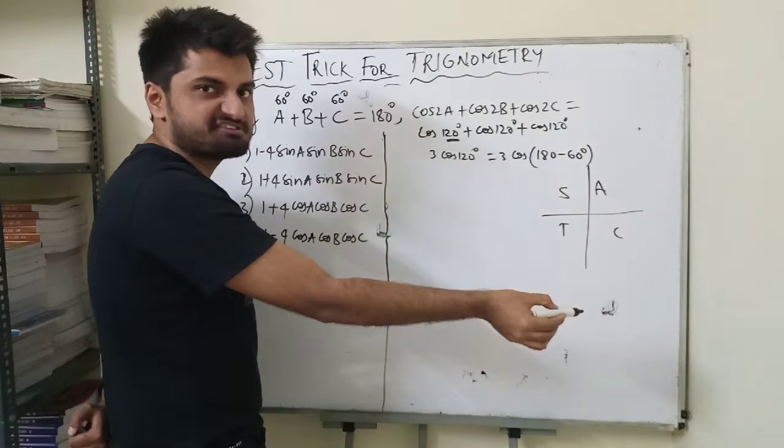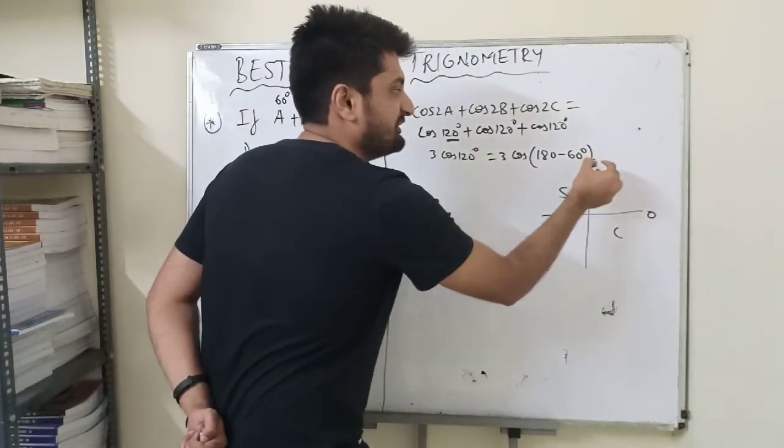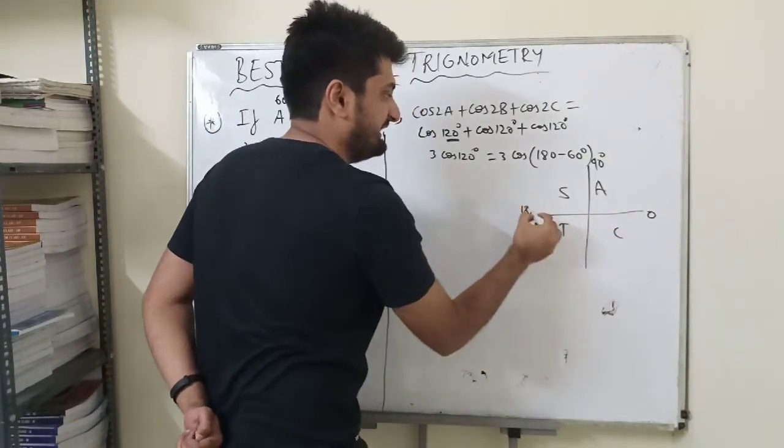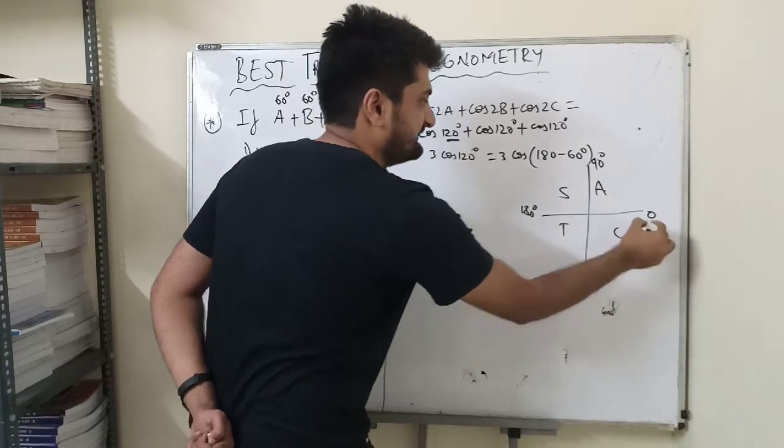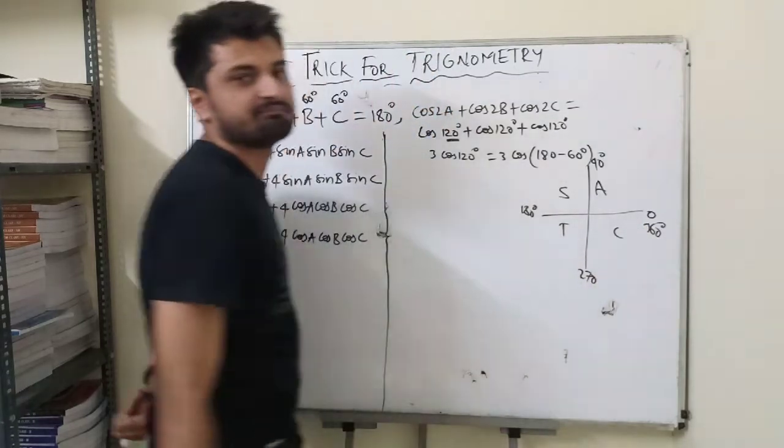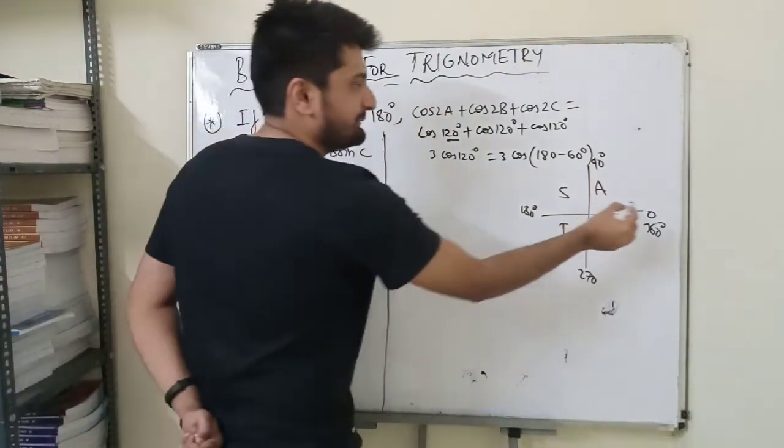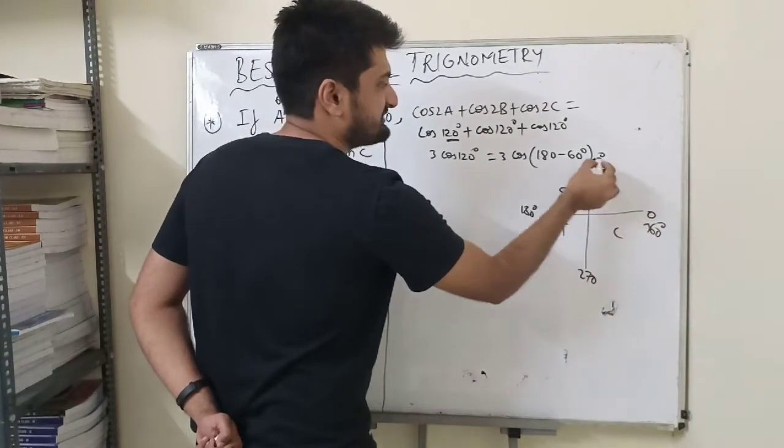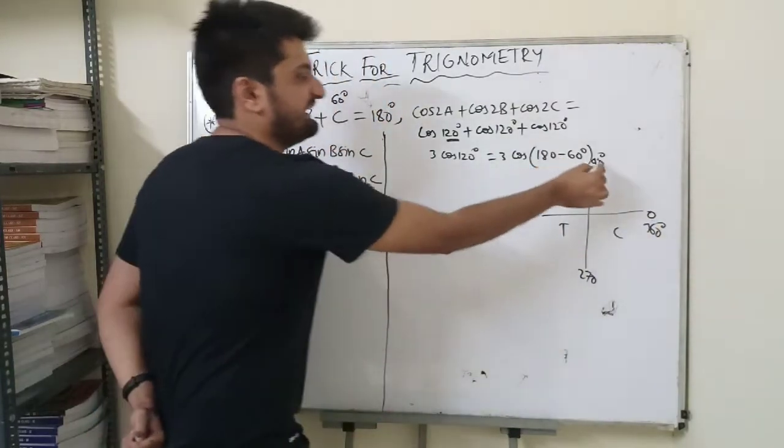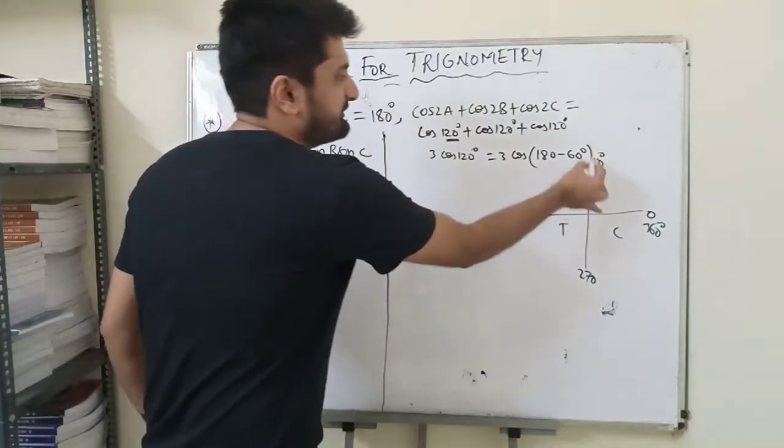So All Silver TeaCups is the concept. This is 0, 90, 180, 270, 360. Between 0 and 90 degrees, all are positive. Between 90 and 180, sin and cosec are positive.